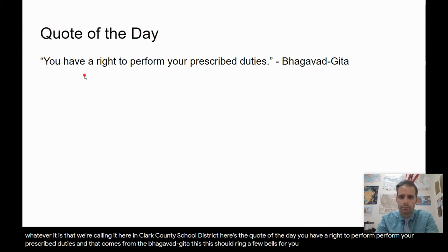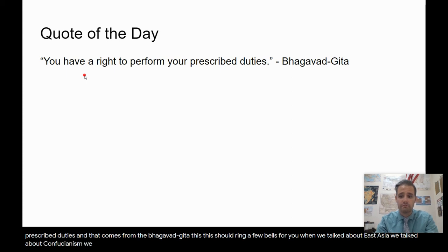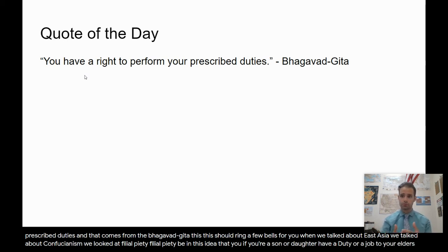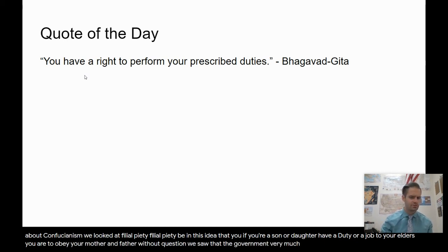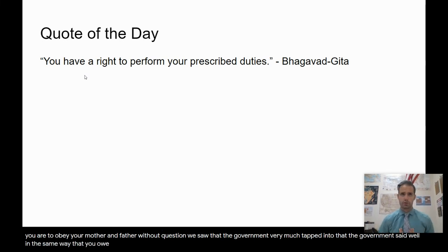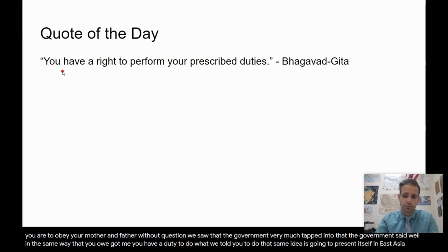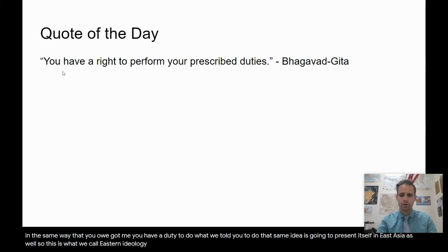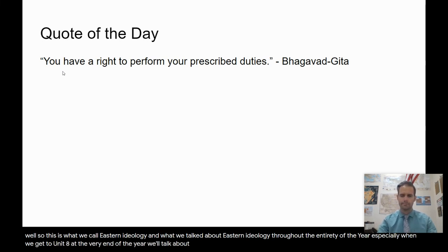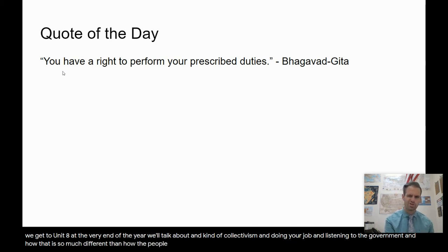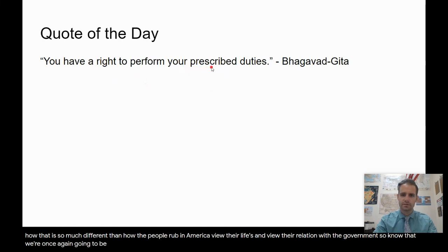This should ring a few bells. When we talked about East Asia, we talked about Confucianism and filial piety — this idea that if you're a son or daughter, you have a duty to your elders; you are to obey your mother and father without question. The government tapped into that, saying: in the same way you obey your elders, you should obey us. That same idea is going to present itself in India as well. This is what we call Eastern ideology — collectivism, doing your job, listening to the government — and we'll be discussing this throughout the year, especially contrasting it with how people in the Western world, namely Europe and America, view their relationship with the government.